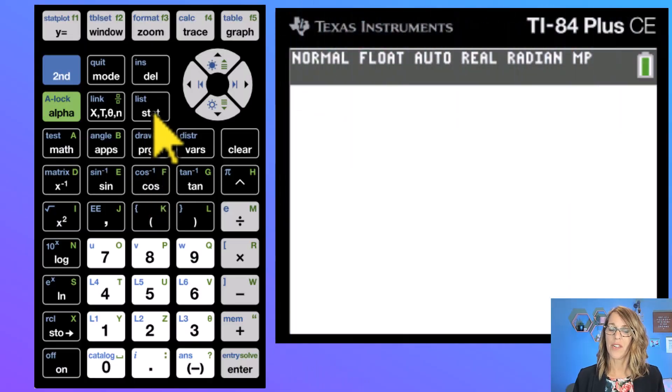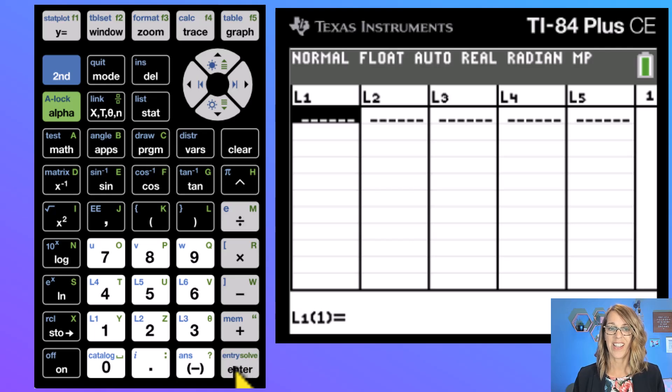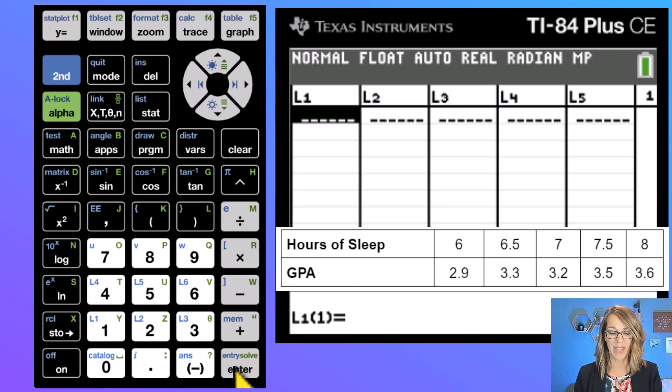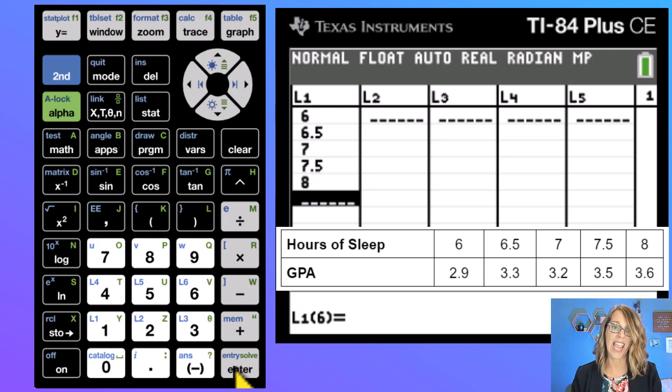From your calculator you want to go to the stat menu and we want to edit or enter data. So we hit enter here because edit is already selected and I am at the very first empty cell of L1. I can go ahead and start to type in these values. For hours of sleep we've got 6, 6.5, 7, 7.5, and 8.